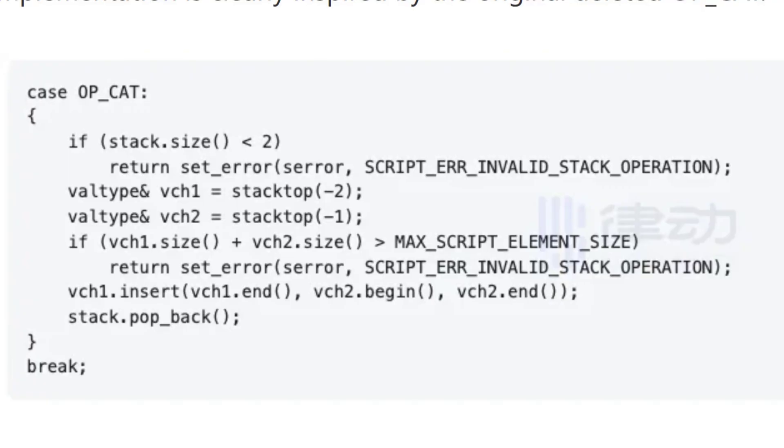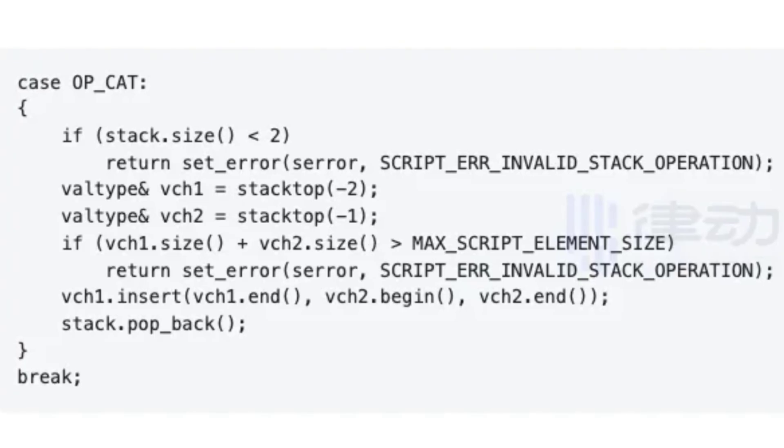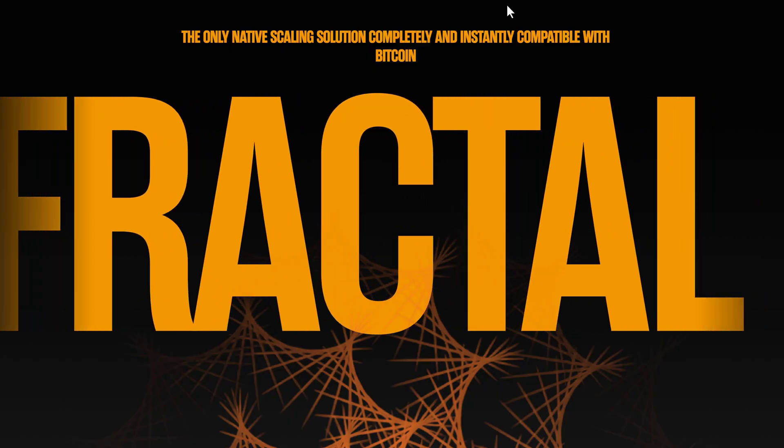There's a huge buzz surrounding Fractal Bitcoin right now, and that's in large part due to something called OpCat, which is an opcode often described as an upgrade for Bitcoin that could allow native smart contract capabilities on Bitcoin layer 1 or even on frameworks compatible with Bitcoin, like Fractal Bitcoin. Currently, Bitcoin's stack-based scripting language has very limited functionality due to restrictions on stack size and the number of opcodes available on Bitcoin layer 1.